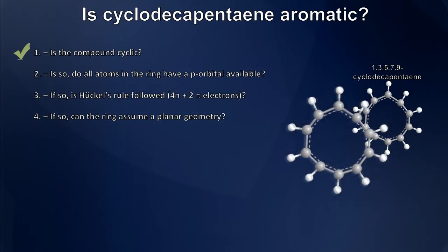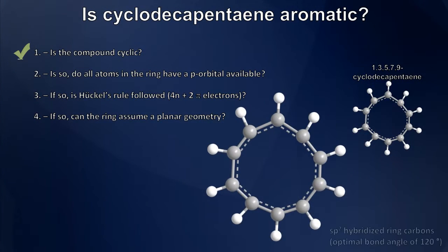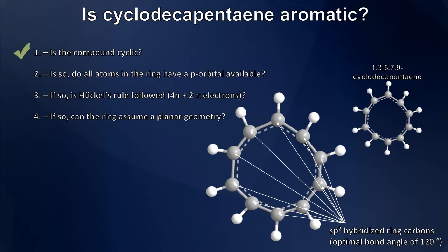Next, we have to ask ourselves this: If it is cyclic, do all of the atoms within that cyclic structure have an available p orbital? And if we take a bit of a closer look at this, we notice, of course, quite quickly that all of these carbon atoms within the ring are sp2 hybridized and therefore should have an available p orbital. So yes, we pass that test as well.